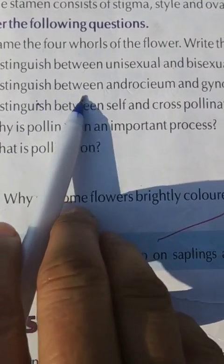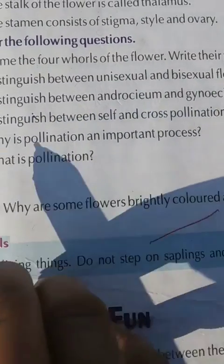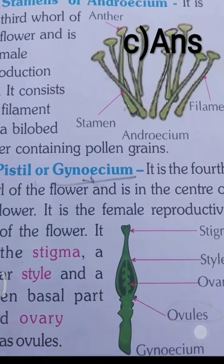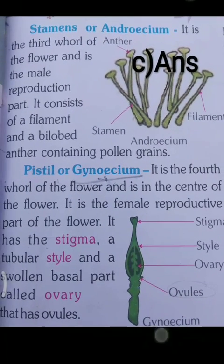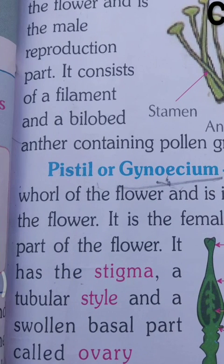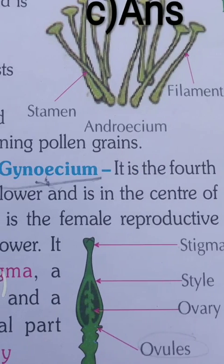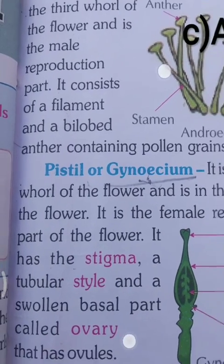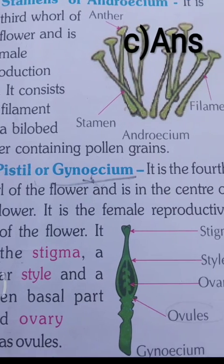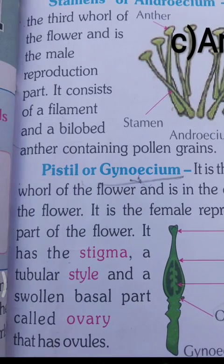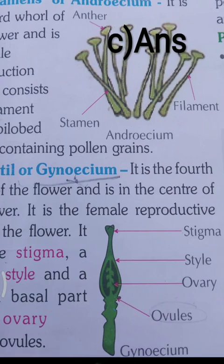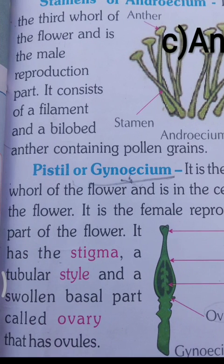C: distinguish between androecium and gynoecium. Third answer: stamens or androecium — it is the third whorl of the flower and is the male reproductive part. It consists of a filament and bi-lobed anther containing pollen grains. Pistil or gynoecium — it is the fourth whorl of the flower, in the center. It is the female reproductive part, having the stigma, a tubular style, and a swollen basal part called ovary that contains ovules.